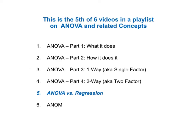This is the fifth of six videos in a playlist on ANOVA and related concepts. There are four videos on ANOVA only, and this fifth video compares ANOVA with regression. The sixth video is about a related statistical analysis called ANAM, the analysis of means, which can do something that ANOVA cannot.